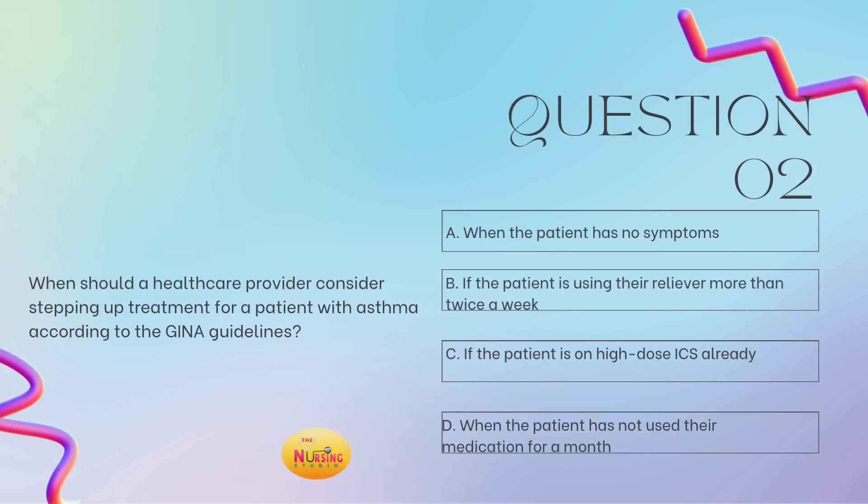Question number two: when should healthcare providers consider stepping up treatment for a patient with asthma, according to the GINA guidelines? Is it A, when the patient has no symptoms; B, if the patient is using their reliever more than two times a week; C, if the patient is on a high-dose ICS already; or D, when the patient has not used their medication for a month? Take a moment and tell me what you got.